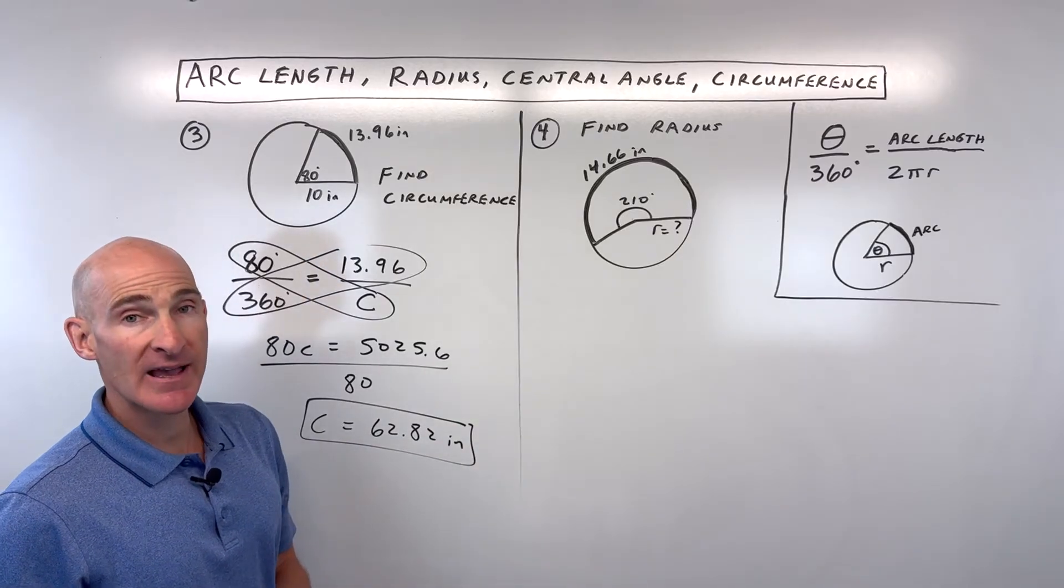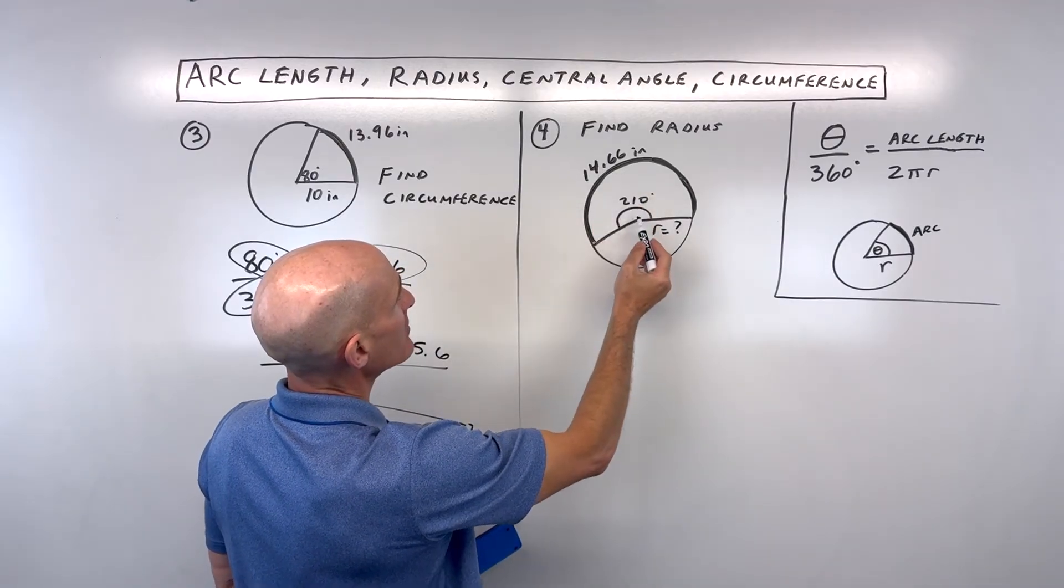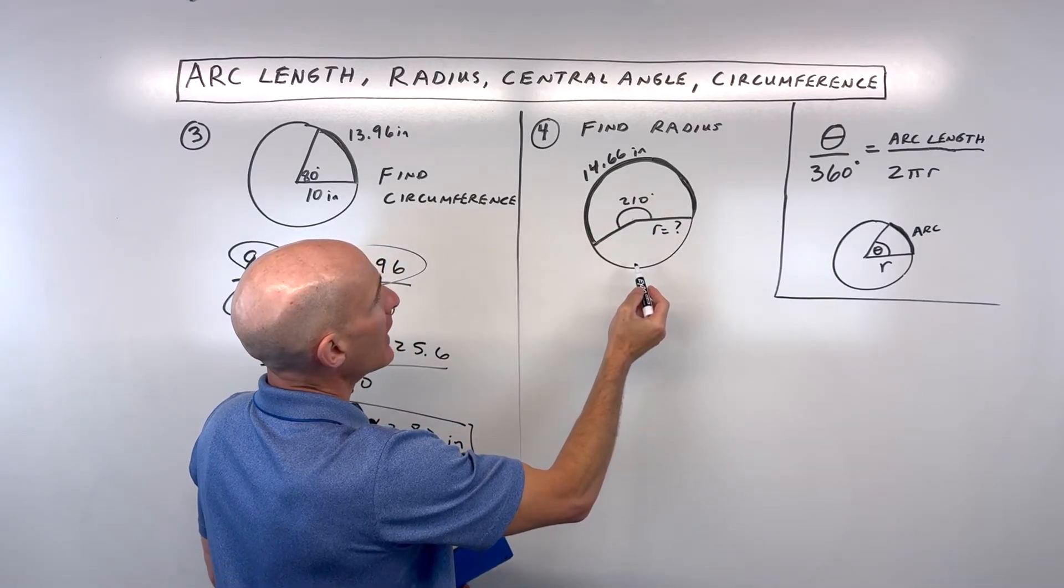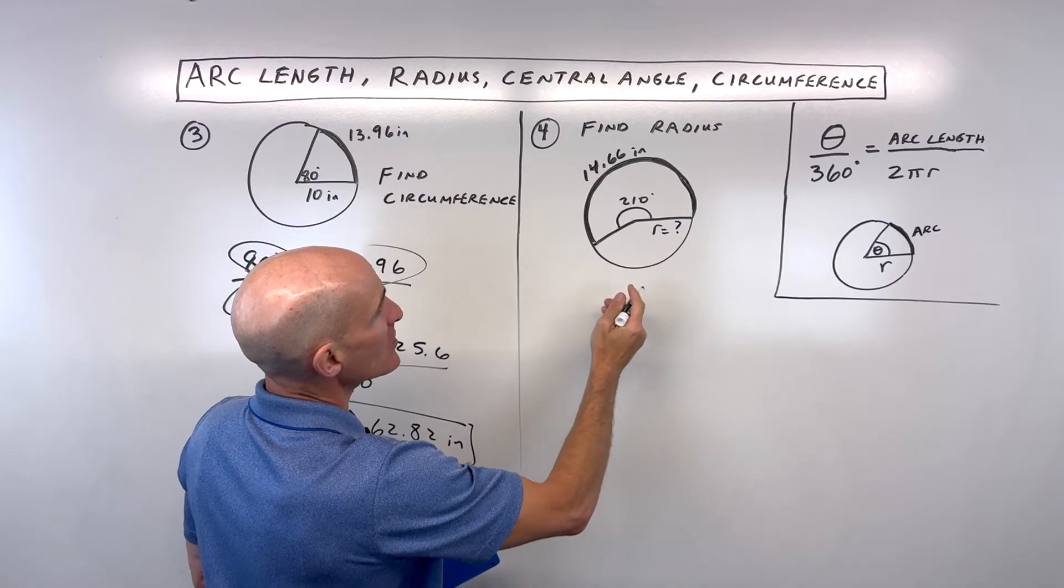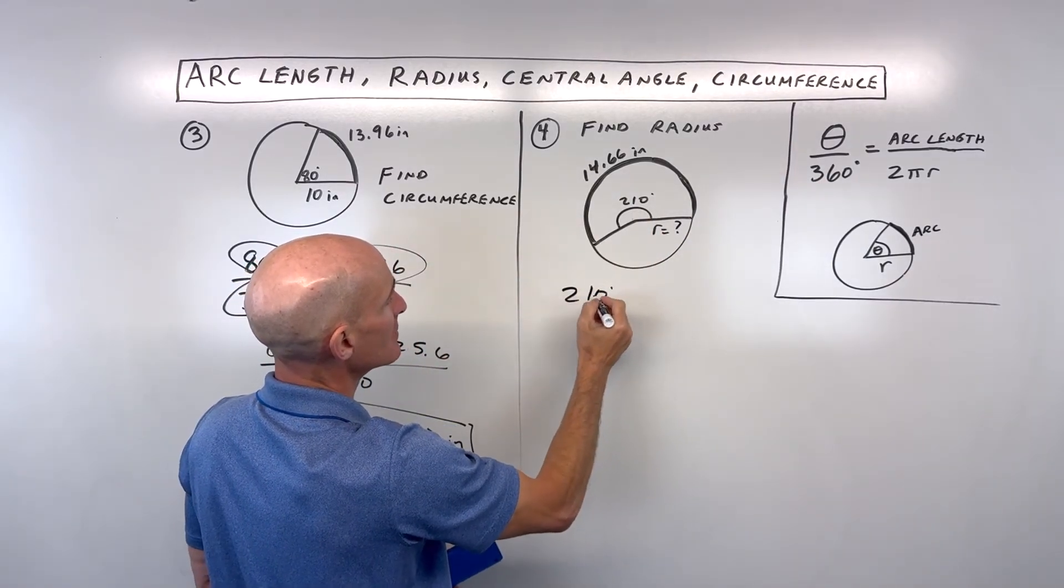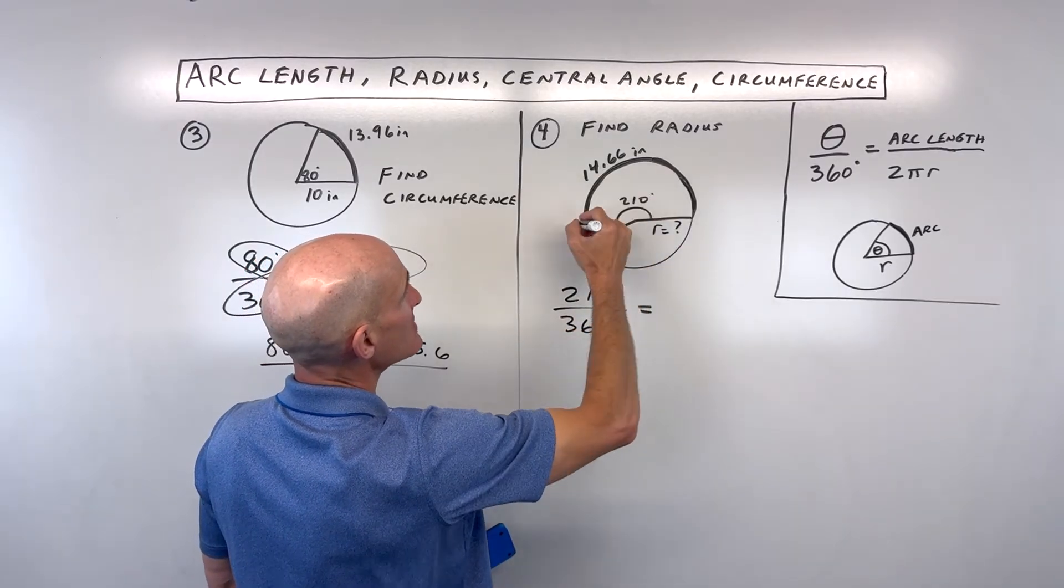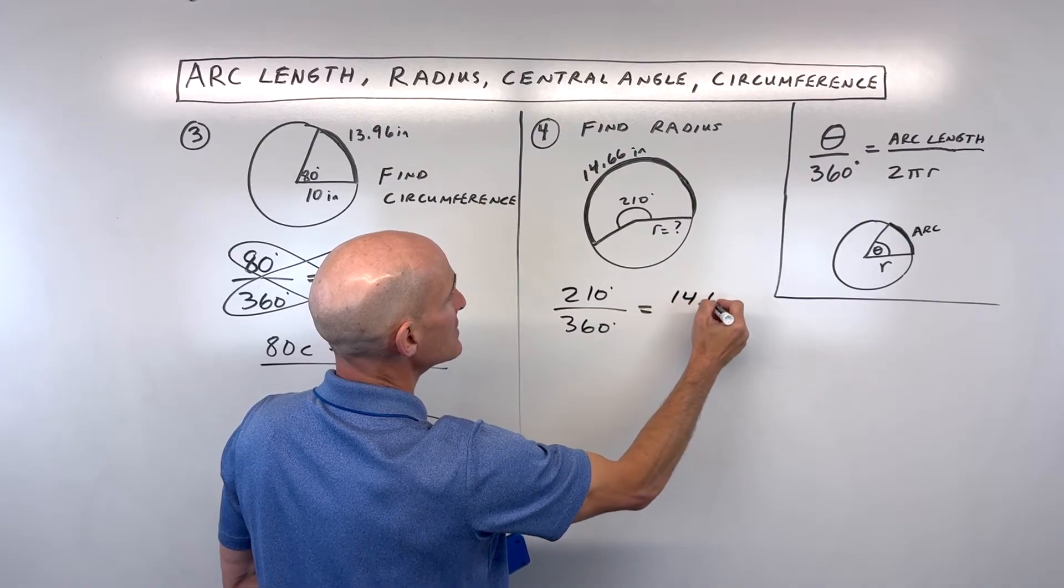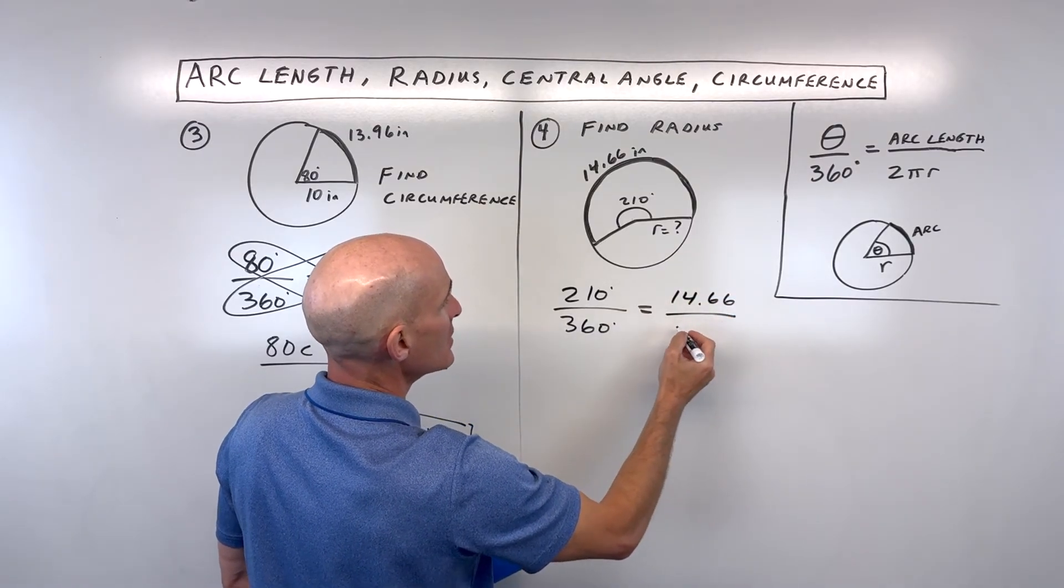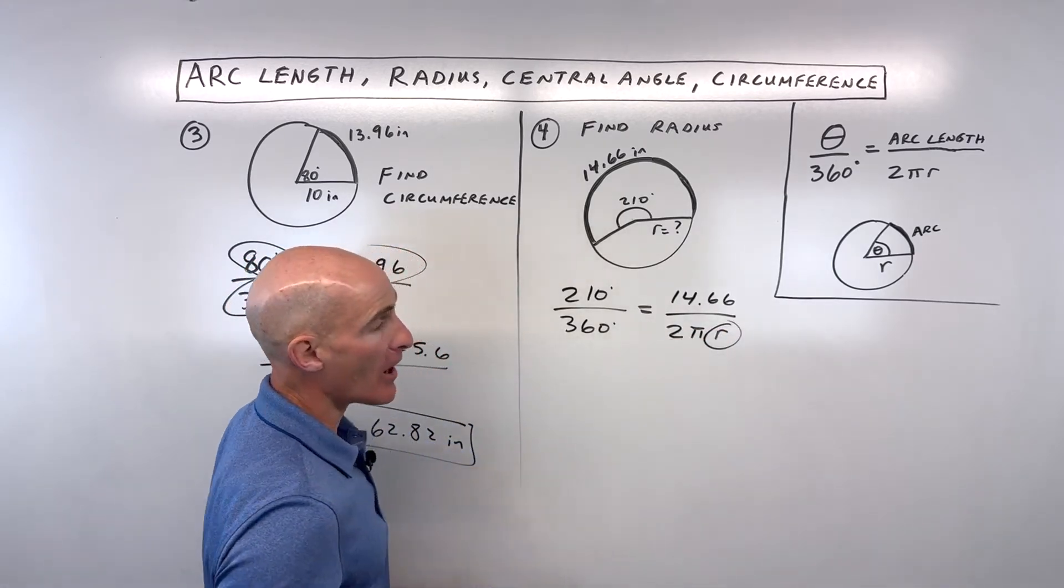And let's take a look at the last example, number 4, find the radius. Now, here what's interesting is they're giving us the arc length, the central angle, and how do we solve this one? Same idea. The theta is the central angle. That's 210 degrees divided by 360. So that ratio is the same ratio as the arc length, 14.66 inches, to the whole circumference, which is 2πr. And our goal is to solve for r.